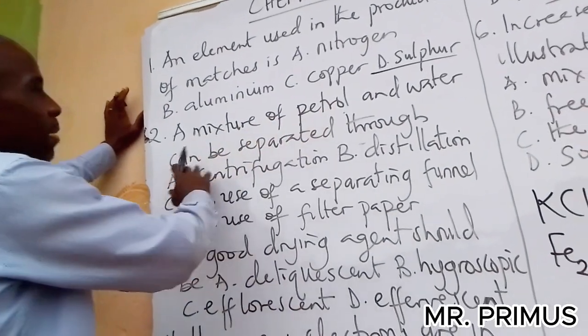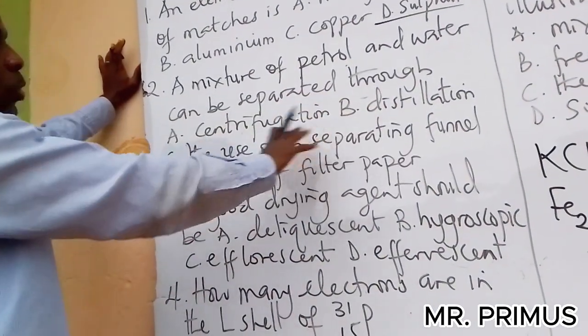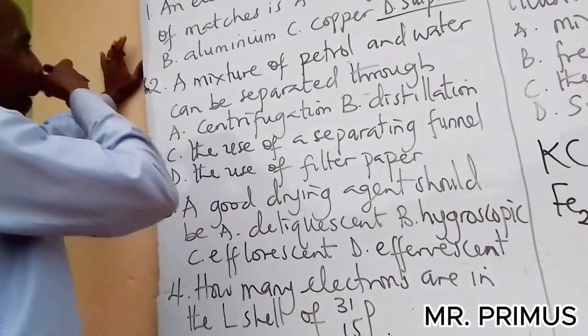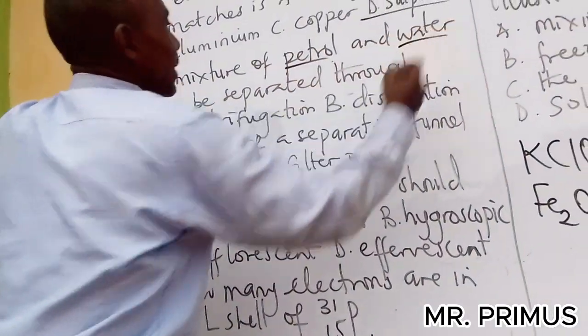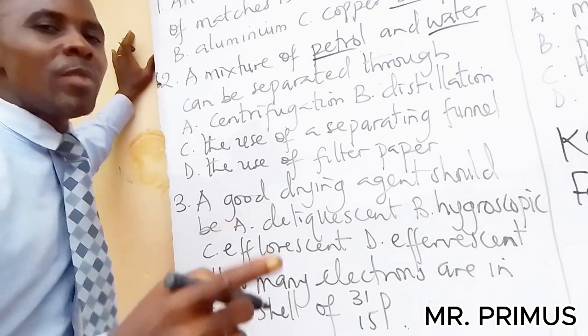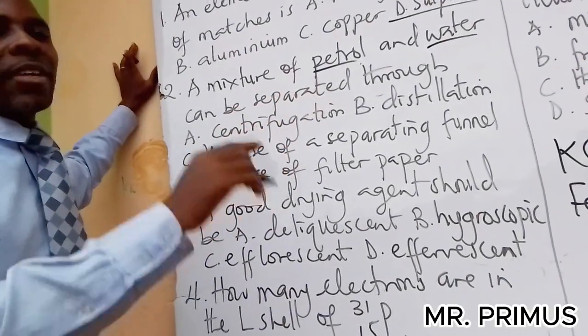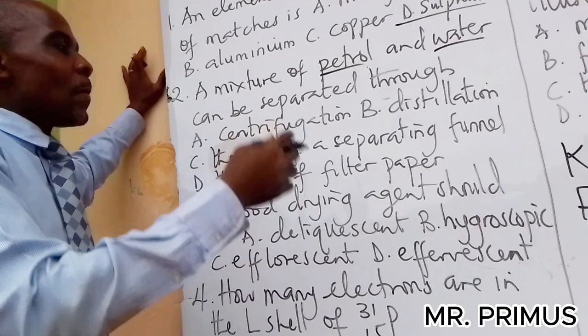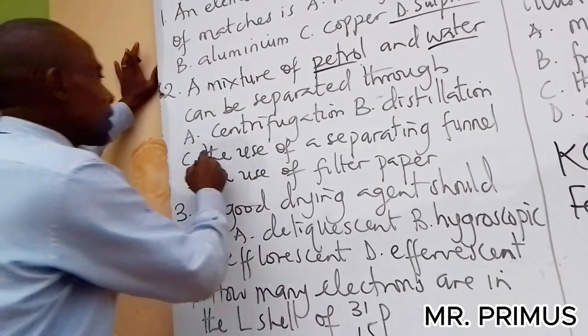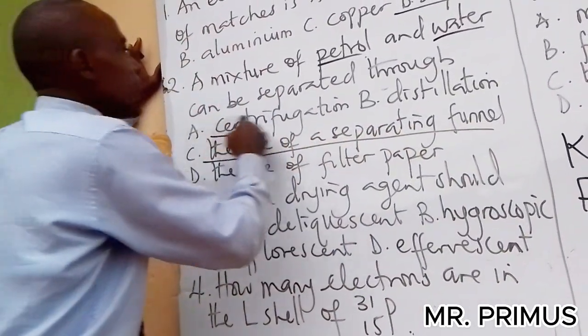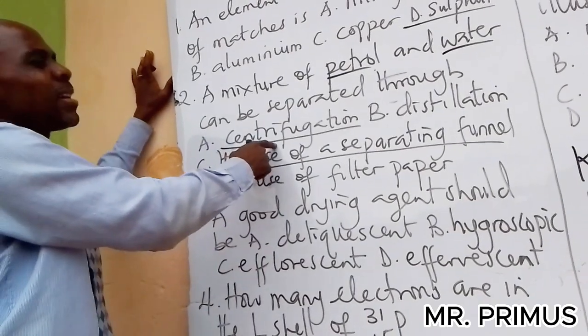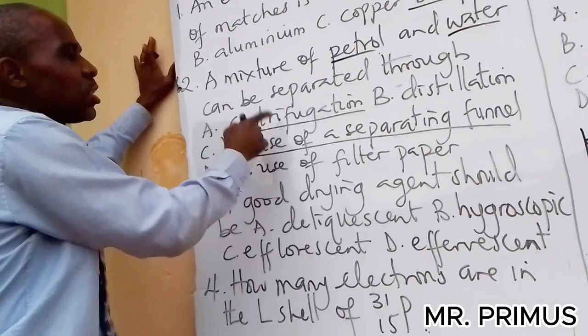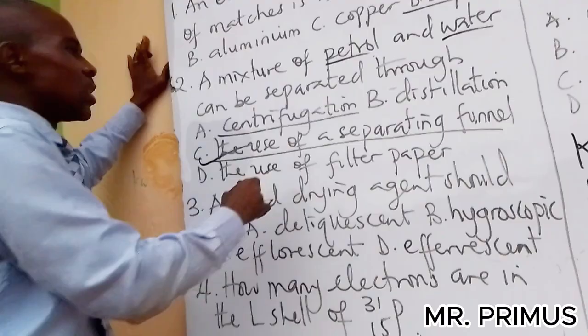A mixture of petrol and water can be separated through what method of separation? Now petrol and water are immiscible liquids, immiscible. So the two liquids that cannot mix, you separate them by use of separating funnel.